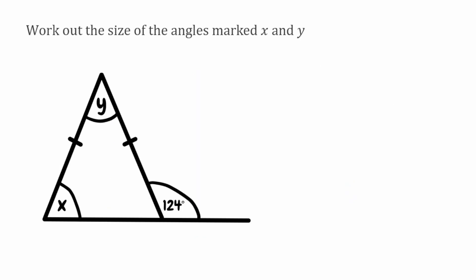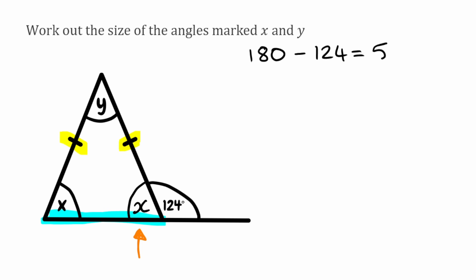For this last question, we've got to find the size of the missing angles marked x and y. With our isosceles triangle, we can see that this side here is equal to this side here, so this here is our base side. The angles on the base must be the same, so if it's x on the left, this angle here must also be x. We're going to figure out what x is by using a different angle rule: we can use the 124 degrees right next to it and the fact that angles on a straight line always add up to 180. So we do 180 take away 124, which leaves us with 56. So x is 56 degrees, and therefore the angle x on the left-hand side is also 56 degrees.